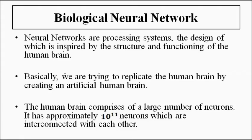The human brain consists of a large number of neurons — approximately 10 to the power of 11 neuron cells — which are connected to each other; they are interconnected.